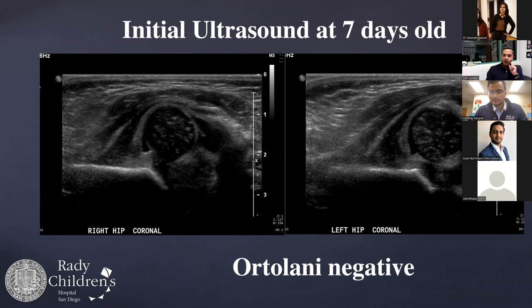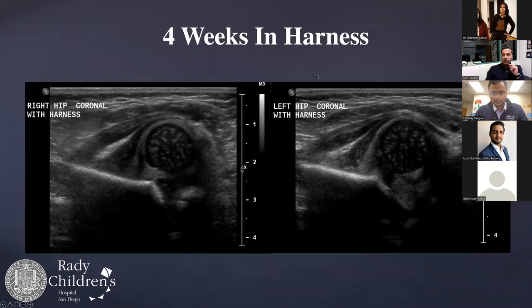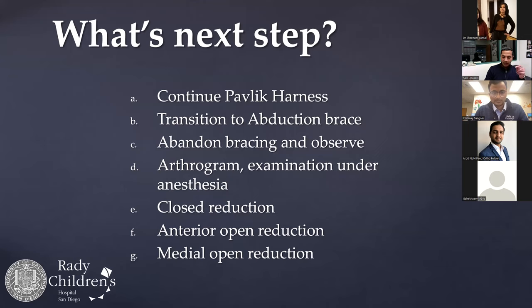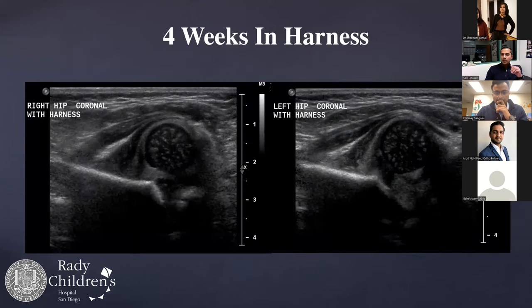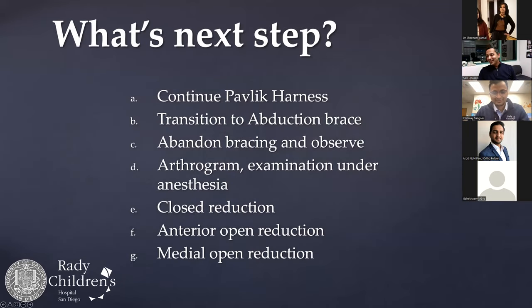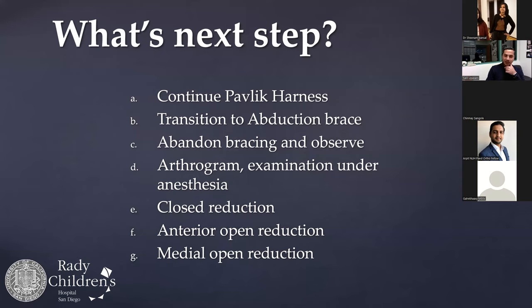This child had bilateral dislocations, Ortolani-negative, and was placed in a Pavlik harness for four weeks but remains dislocated. Interestingly, in that IHDI study bilateral dislocation was not a risk factor for brace failure, yet this patient failed. Options include continuing the harness, transitioning to an abduction brace, observing until the femoral epiphysis ossifies, or taking them to the operating room for arthrogram, closed reduction, or open reduction. As the current fellow, what option would you choose — she's eight weeks old and has failed four weeks of Pavlik?